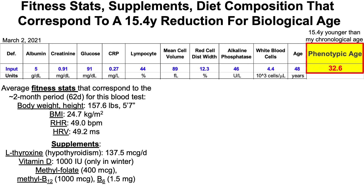What supplements am I taking? I take levothyroxine for hypothyroidism — I've taken that for the past 25 years since I was diagnosed. I take Vitamin D in the winter, 1,000 IU a day, only in the winter and not in the summer when I get sunlight regularly. And I take a stack of methylfolate, methyl B12, and B6 to try to keep my homocysteine down — it likes to get into the 15 range, about two times as high as it should be. This supplement stack seems to help reduce it down to less than 10.